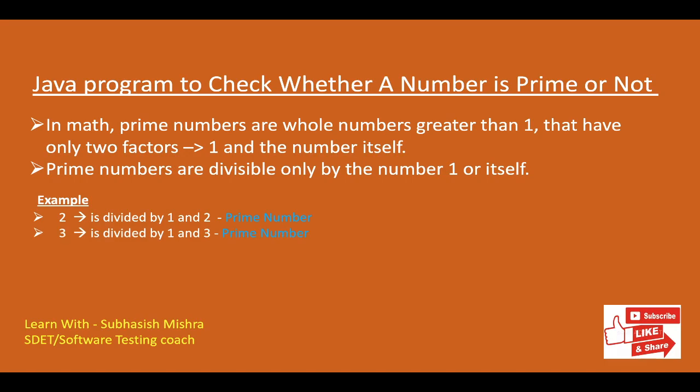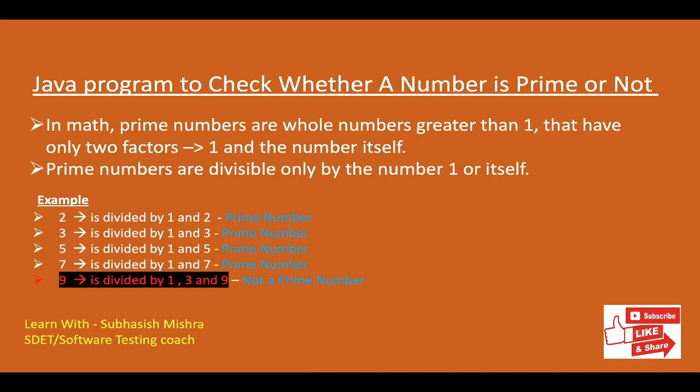Similarly, 3 is divided by 1 and 3, so it is a prime number. 5 is divided by 1 and 5, so it is a prime number. 7 is divided by 1 and 7 — it is not divided by 2, 3, 4, 5, or 6 — so it is a prime number. Now 9 is divided by 1, 3, and 9, so it is not a prime number.